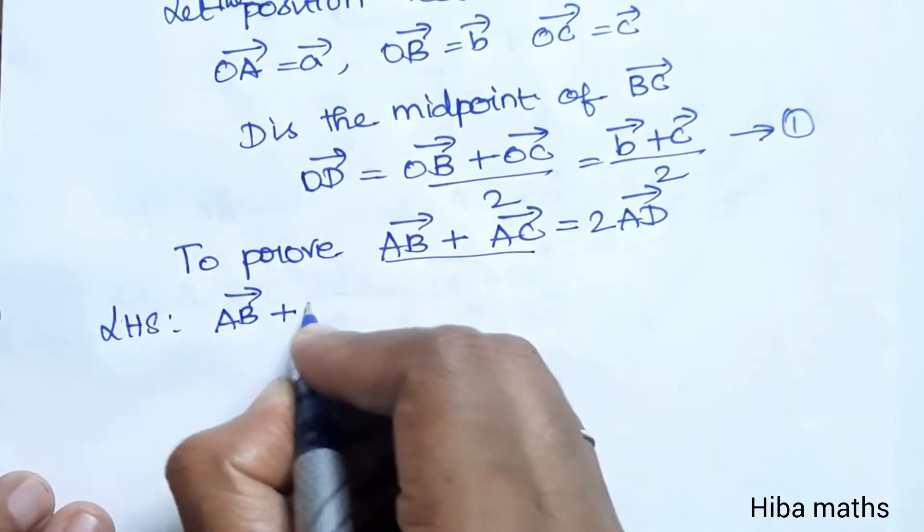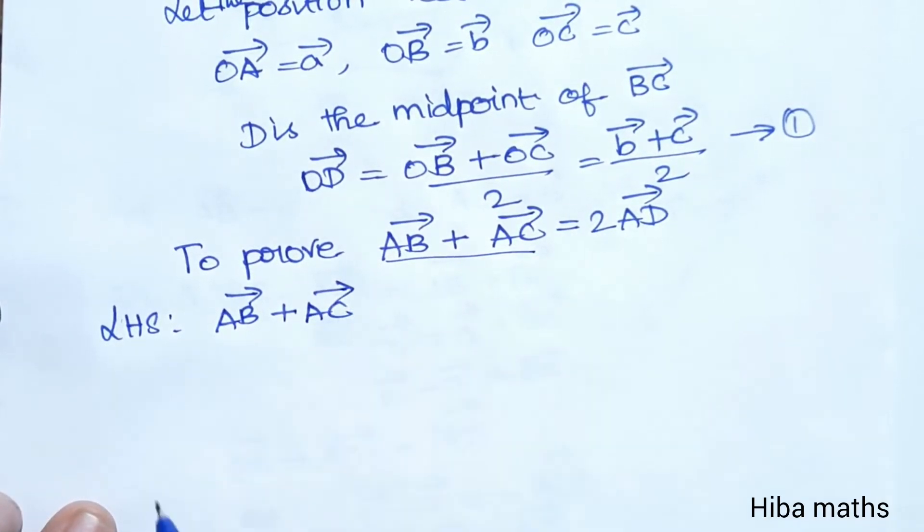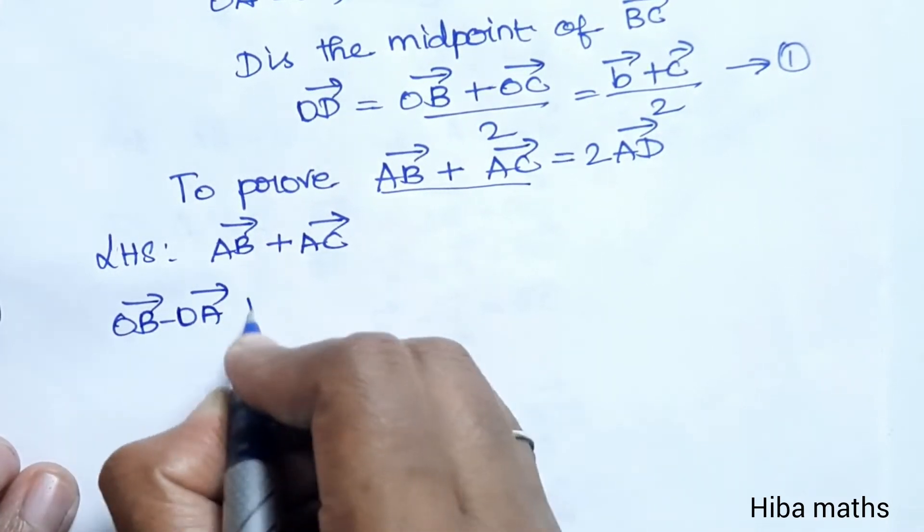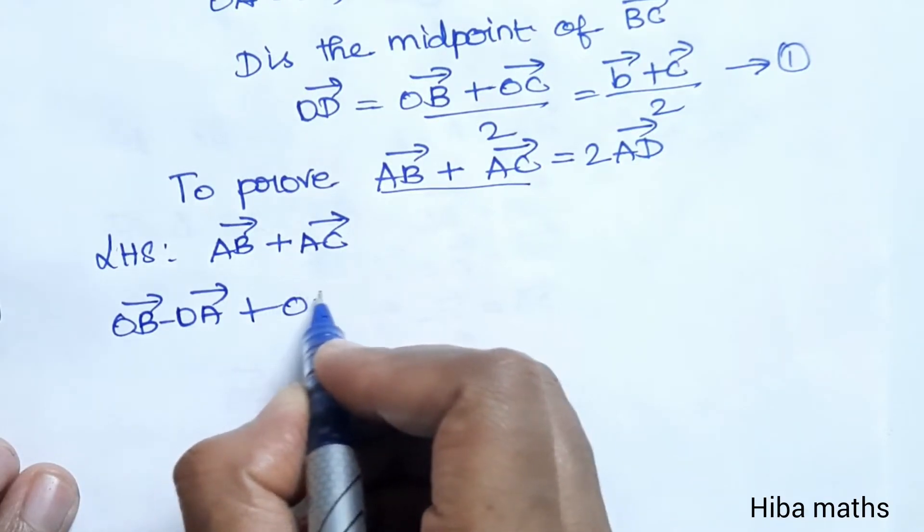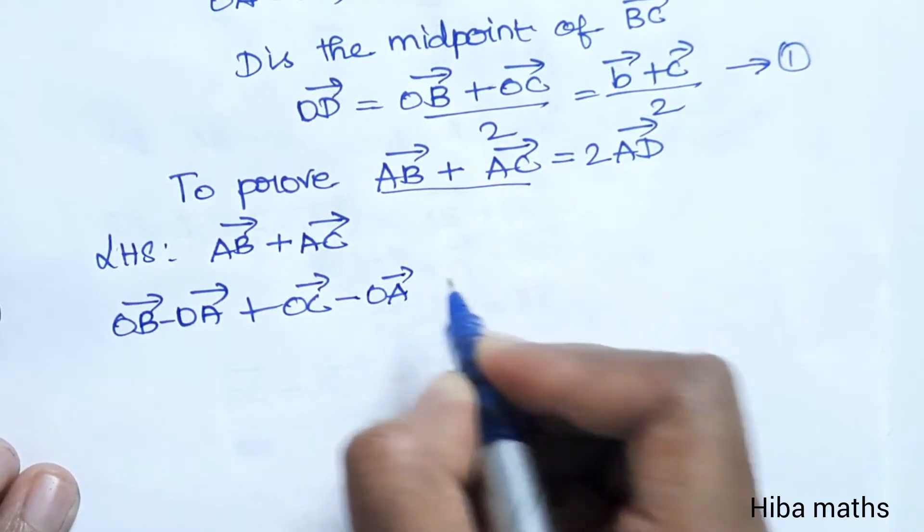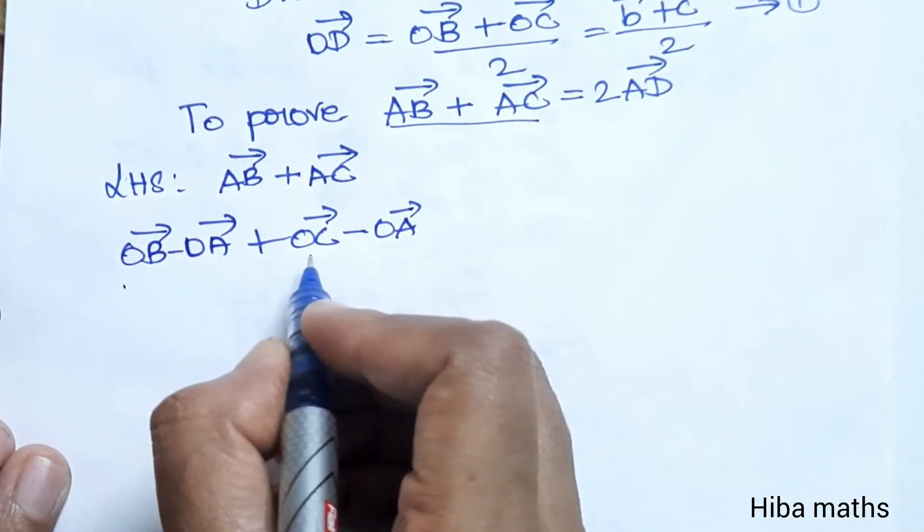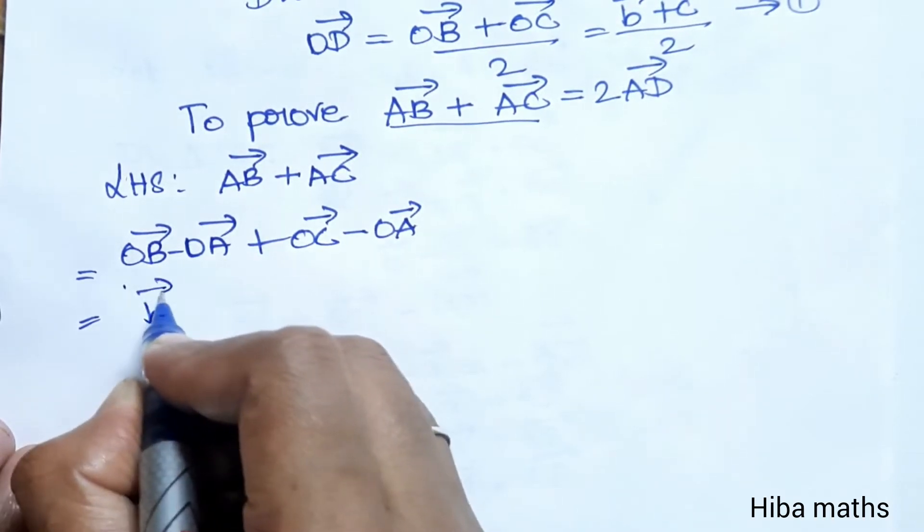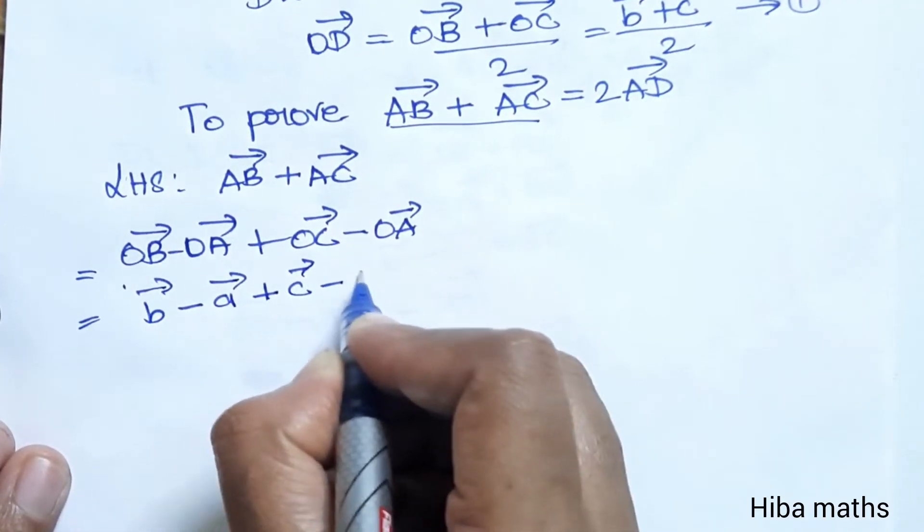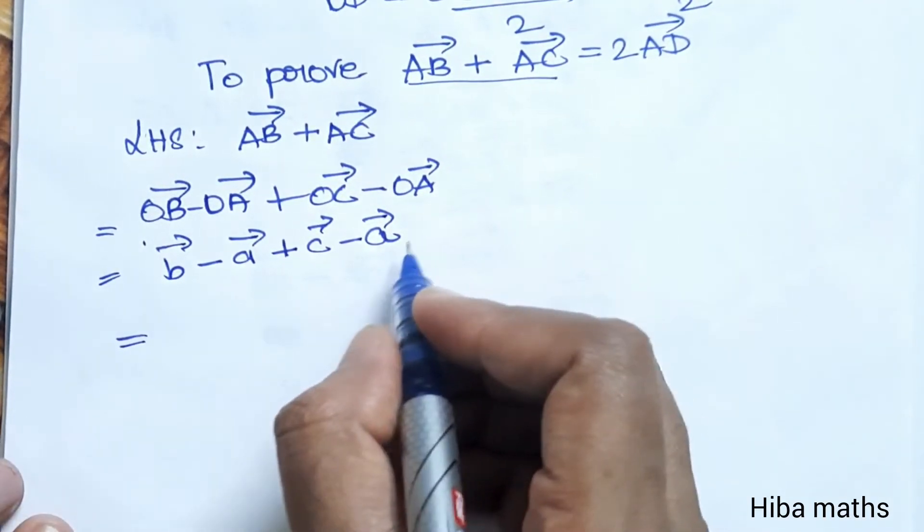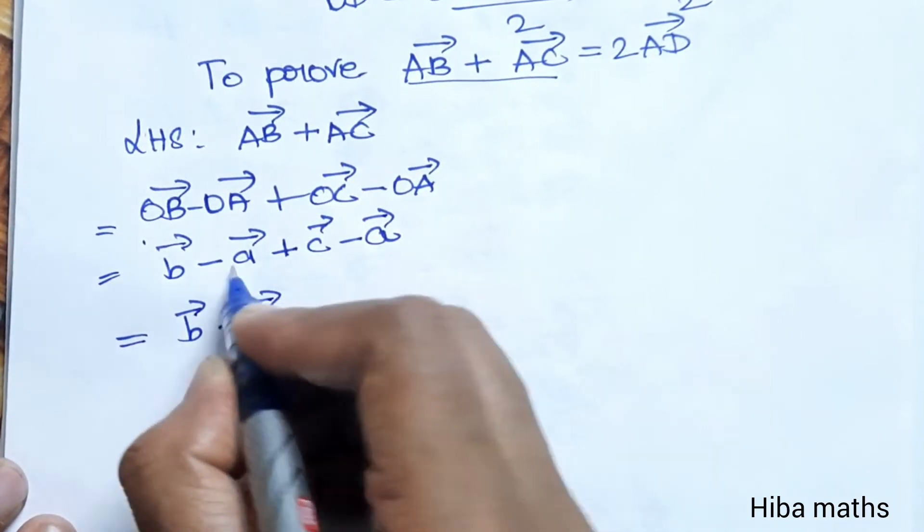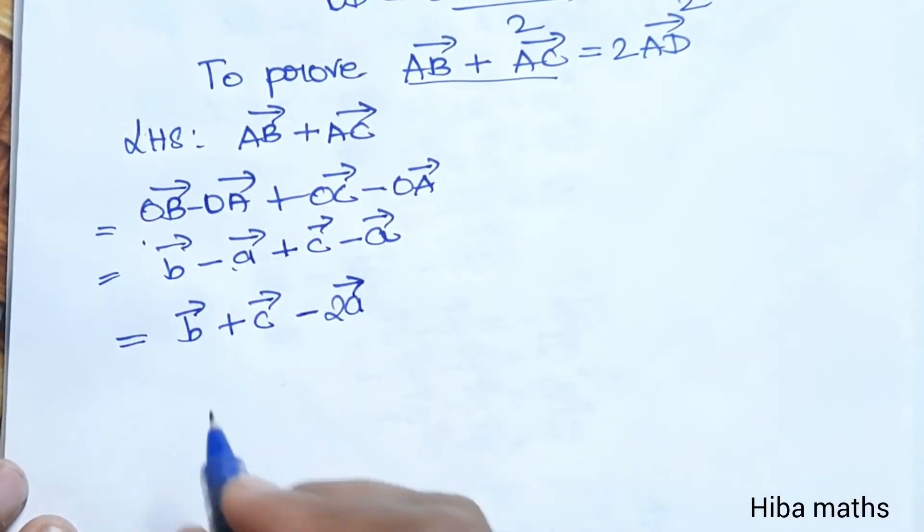LHS: AB vector plus AC vector equals (OB vector minus OA vector) plus (OC vector minus OA vector). Adding these: OB vector minus OA vector plus OC vector minus OA vector equals B vector plus C vector minus 2A vector. That's the LHS part.